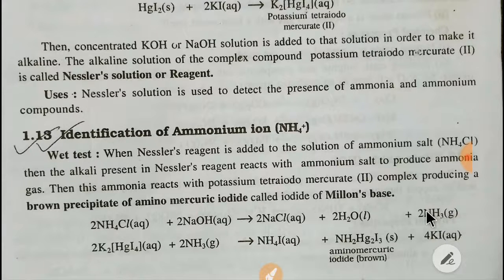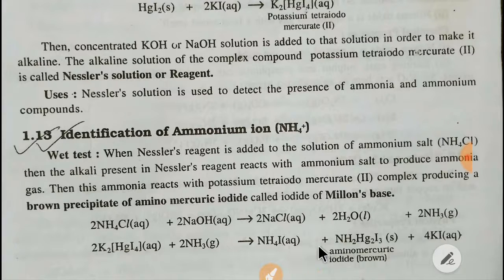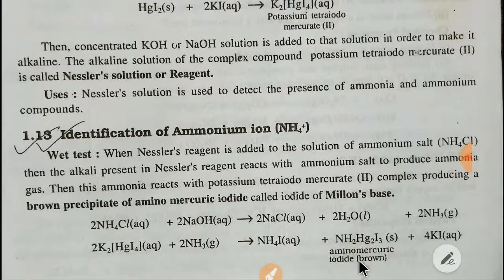The ammonia gas then reacts with the potassium tetraiodo mercurate complex, producing a brown precipitate of aminomercuric iodide. This brown compound is called Millon's base. By the change of color to brown, we can detect the presence of ammonia.